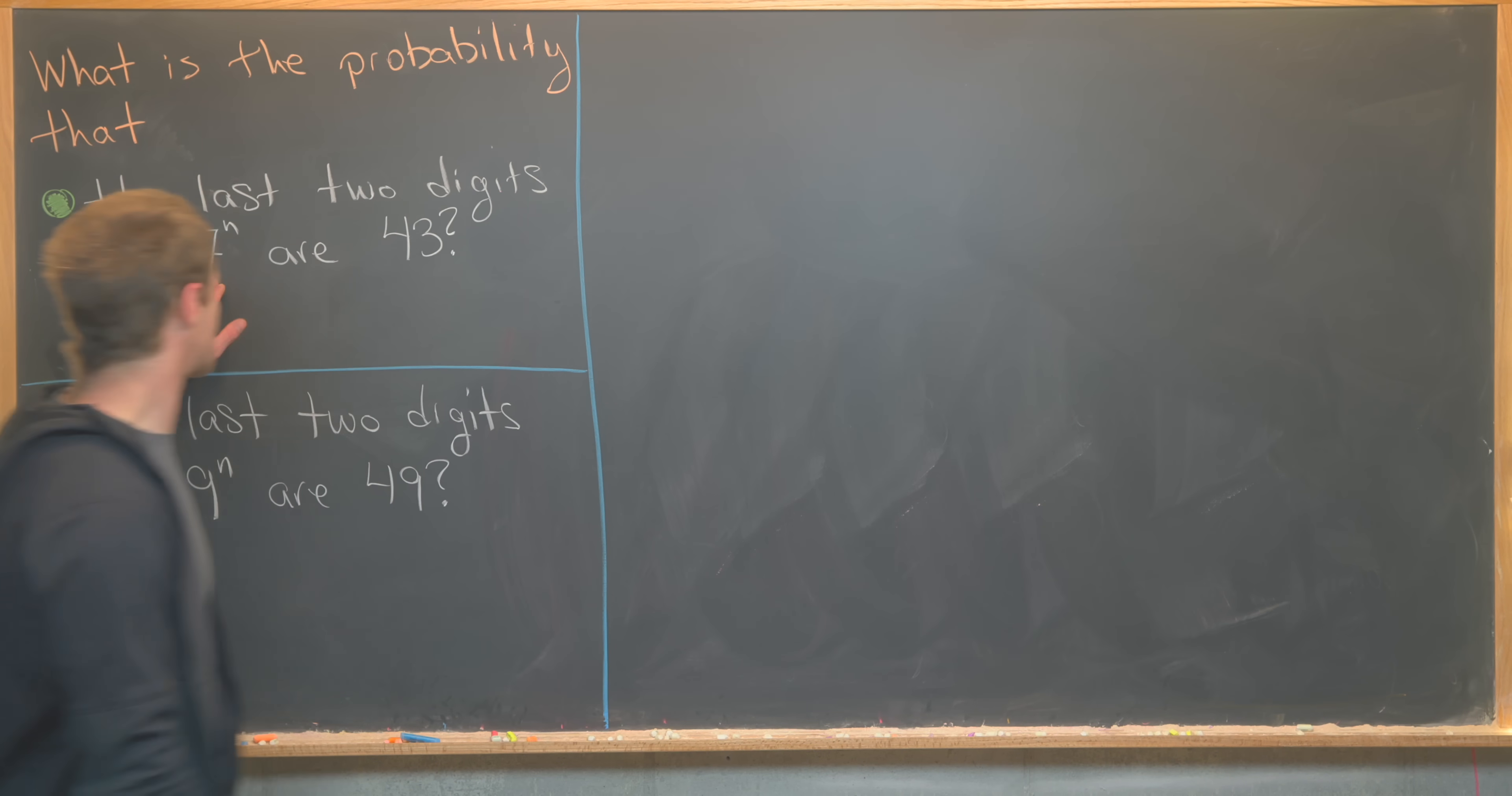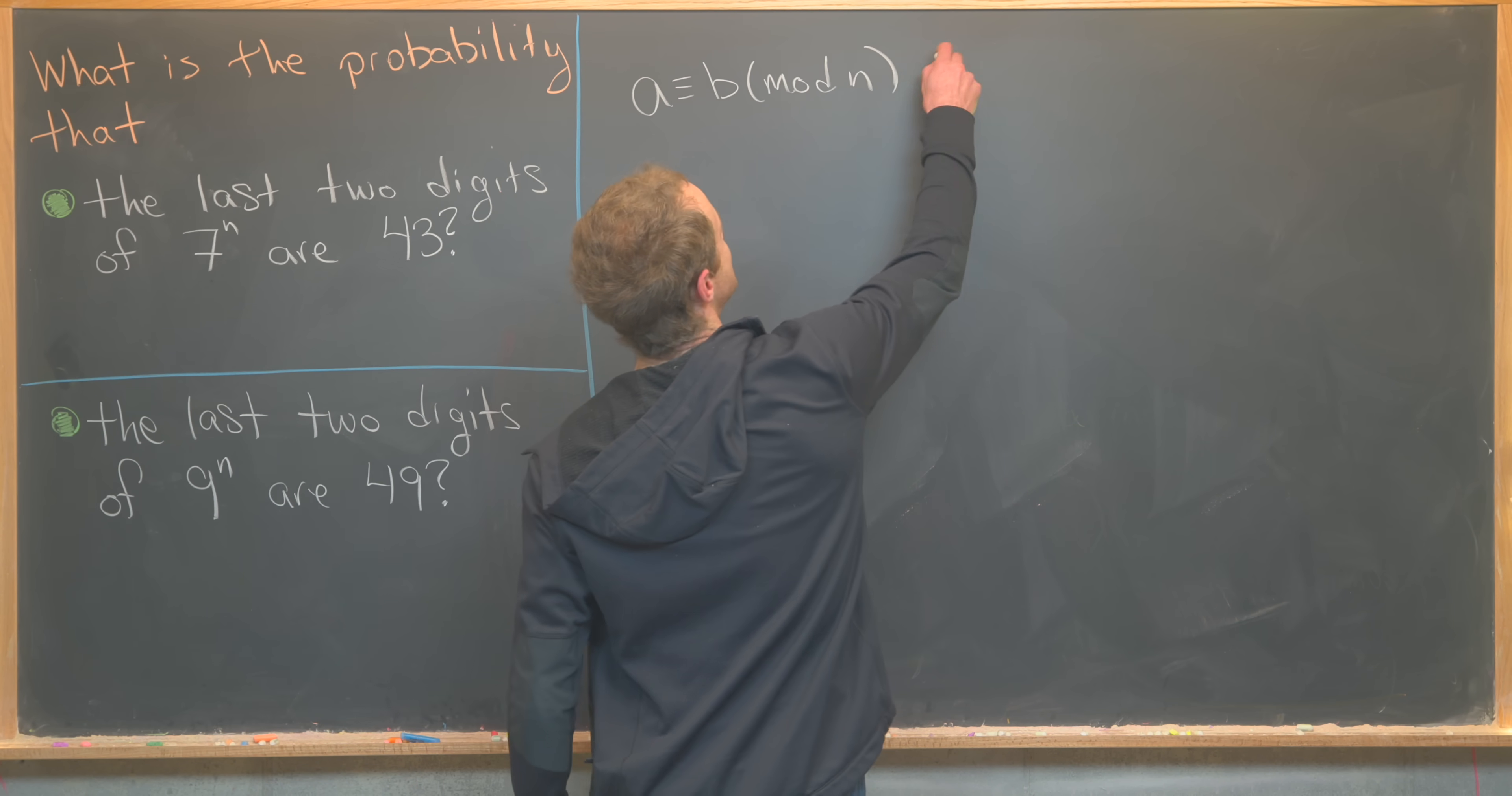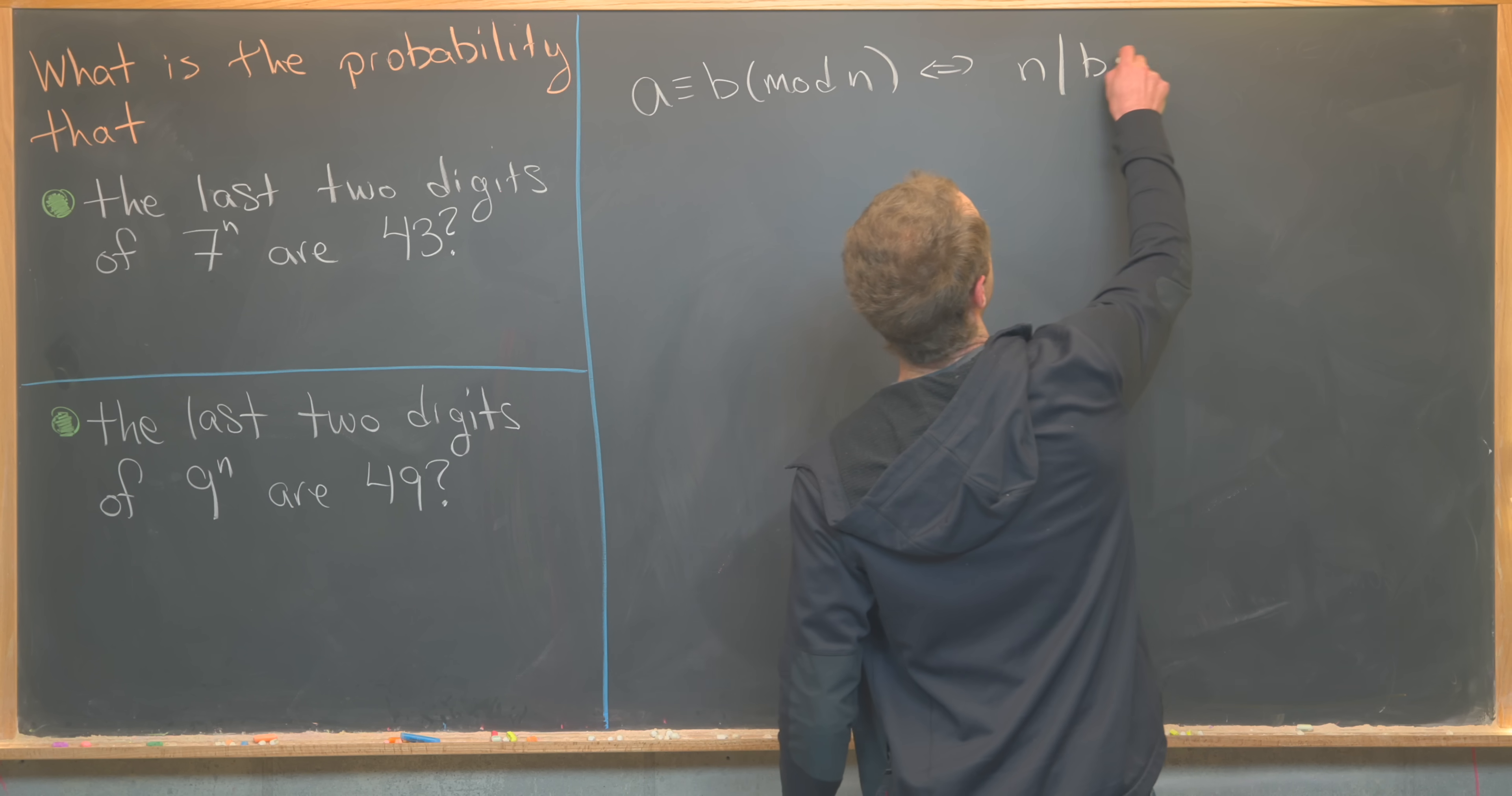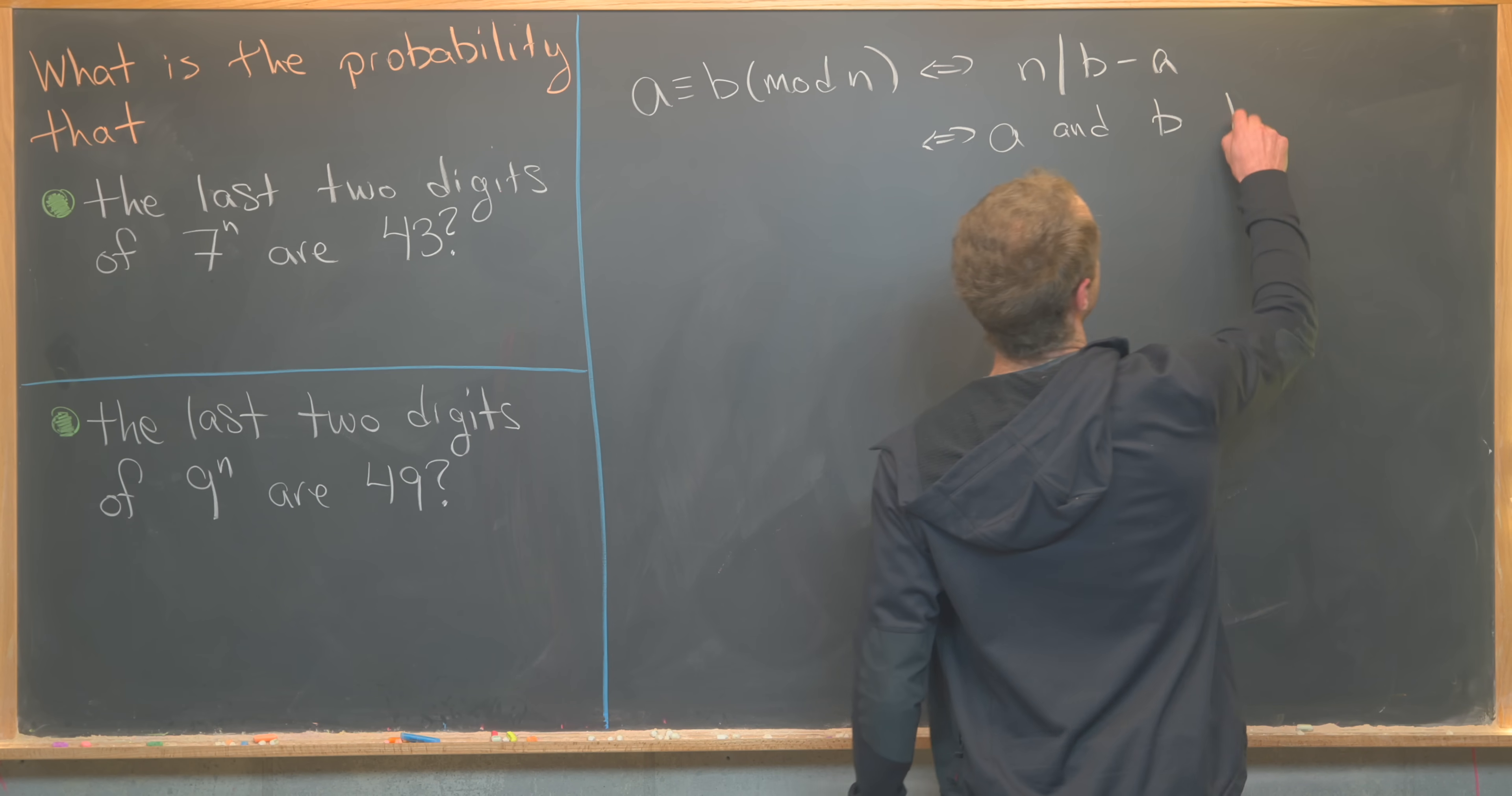So first off, I want to make a chart of 7 to the n, but I don't want to make a chart of the values of 7 to the n in general. I want to reduce them modulo 100. So let's maybe recall what I mean by reduction modulo n. And what I mean is that a is congruent to b mod n if and only if n divides b minus a. But that's equivalent to saying that a and b have the same remainder when divided by n.